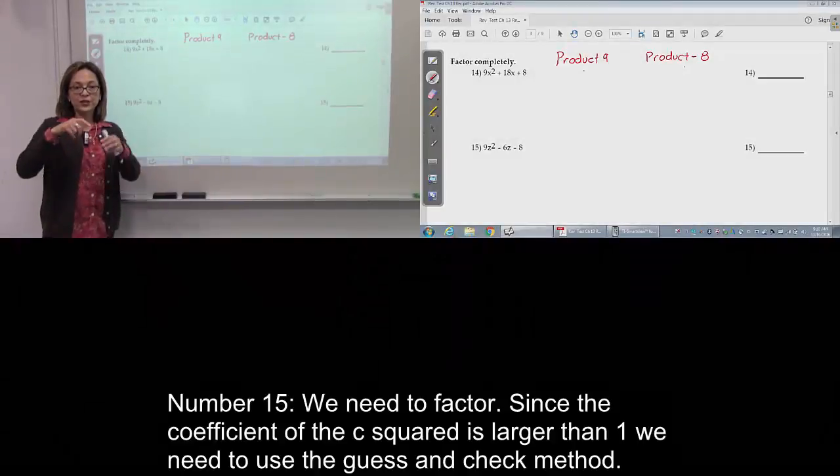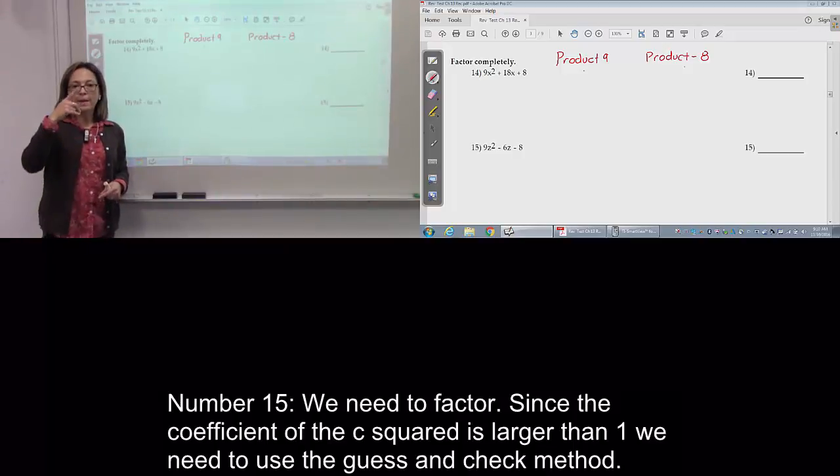Number 15. We need to factor. Because the coefficient of the z squared is larger than 1, we have to use the guess and check method.